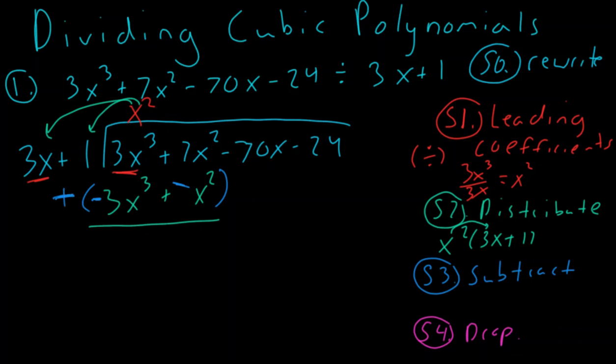Well, 3x cubed minus 3x cubed is 0, and 7x squared minus x squared will actually give me a positive 6x squared. And then this brings us to our next step, step four, which says to drop. And so I'll drop my minus 70x. And once you run through these four steps, all you have to do from here is just repeat this process until the problem ends. So let's go back up to our step number one.